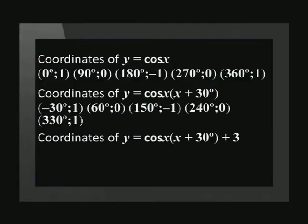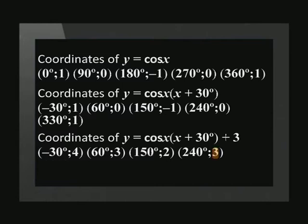There is also a vertical shift in this equation. q is equal to positive 3. This means the graph has shifted 3 units up. So we add 3 units to each y coordinate in step 3. This set of coordinates can now be plotted to sketch the graph: (-30, 4), (60, 3), (150, 2), (240, 3), (330, 4).